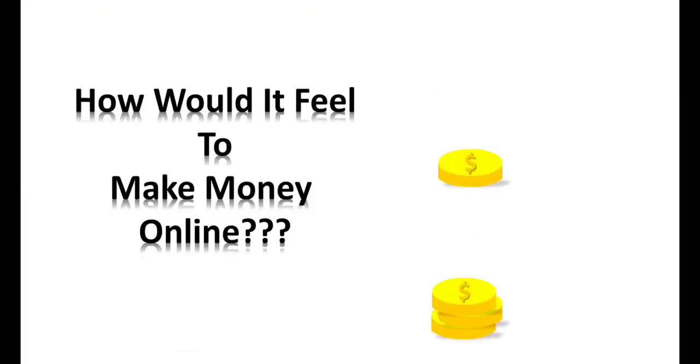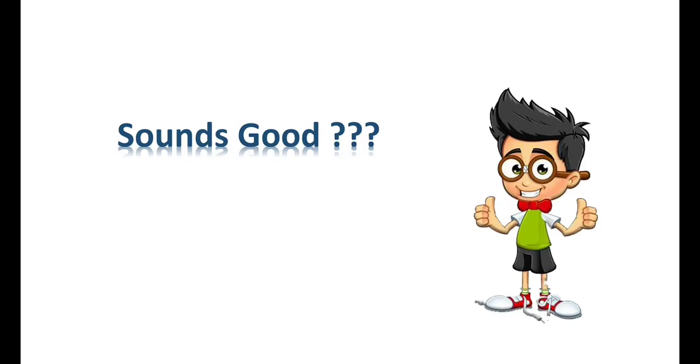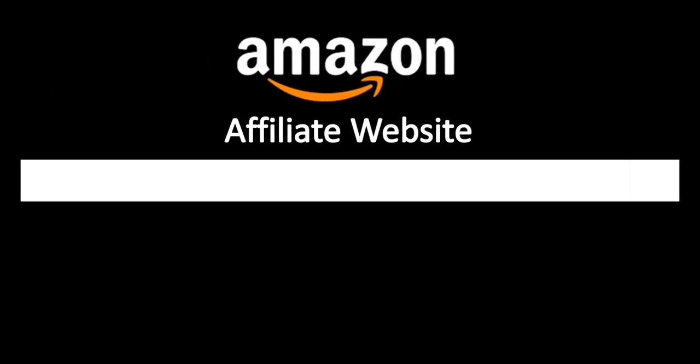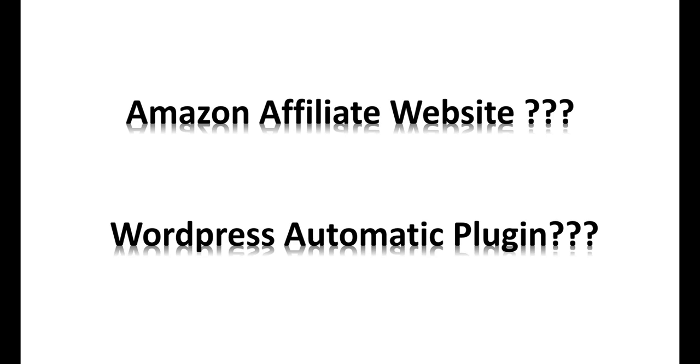How would it feel to make money online while you just sit and relax and someone else does the job for you? Sounds good! If you are thinking about how you can do this, don't wonder — you can easily do this with an Amazon affiliate website and the WordPress Automatic plugin. You don't need to write any content or post anything; everything will be done automatically. Watch this video till the end to get all your answers.